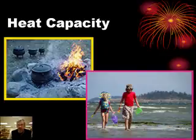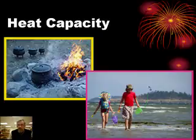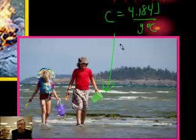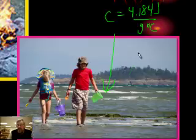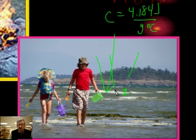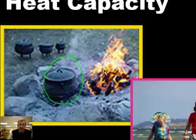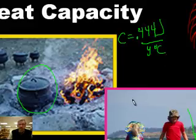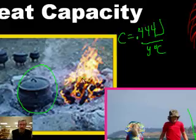Substances with high specific heats tend to resist temperature change really well. Water, for example, has a specific heat of 4.184 joules per gram per degree C — that's very high compared to almost all substances. It takes a lot of solar energy to raise the temperature even a small amount, which regulates surrounding temperatures, which is why people like to live near large bodies of water. On the other hand, iron has a specific heat of 0.444 joules per gram per degree C — about a tenth of water's — so it heats up fast, which is why you'd make a frying pan out of it.